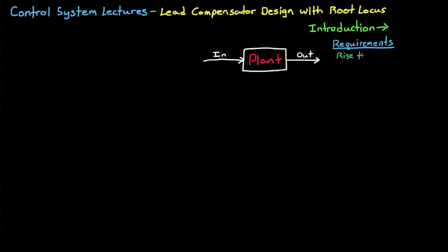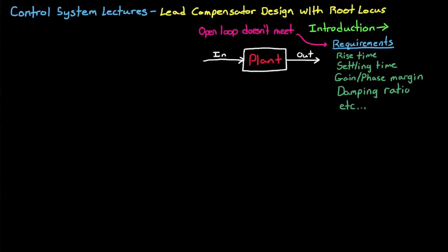The first thing that you need to do is determine your design requirements. These are the performance goals that you hope your system is going to meet - things like rise time, settling time, phase margin and gain margin, damping ratio, and so on. But whatever your requirements are, you determine at this point that your open-loop system can't meet them, so you decide that you need to implement a closed-loop control system around this plant.